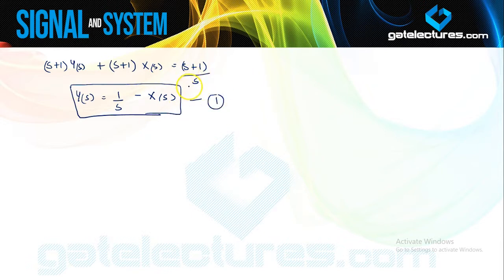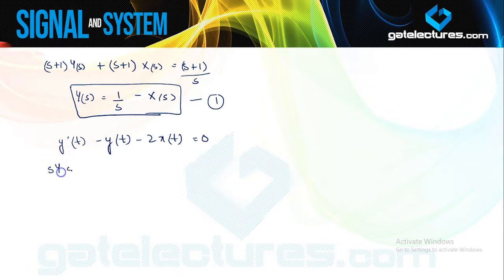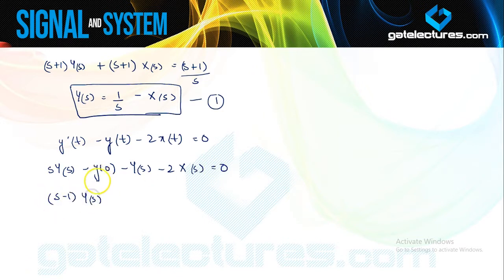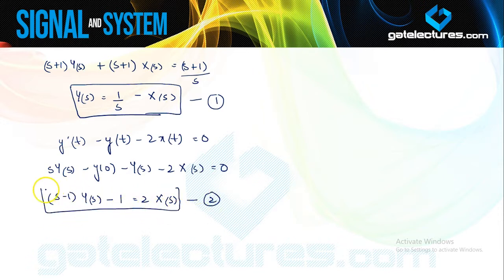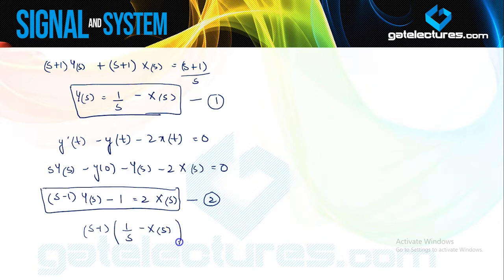The second equation is y'(t) minus y(t) minus 2x(t) = 0. Performing unilateral Laplace transform: s·Y(s) minus y(0) minus Y(s) minus 2X(s) = 0. Simplifying: (s minus 1)·Y(s) minus 1 = 2X(s). This is the second transformed equation. Now substituting the value of Y(s) from equation 1 into equation 2.